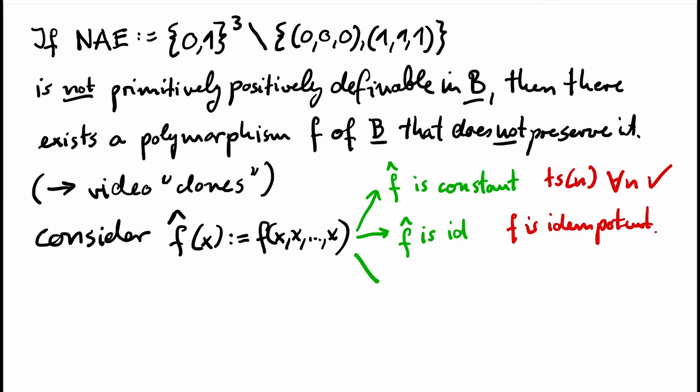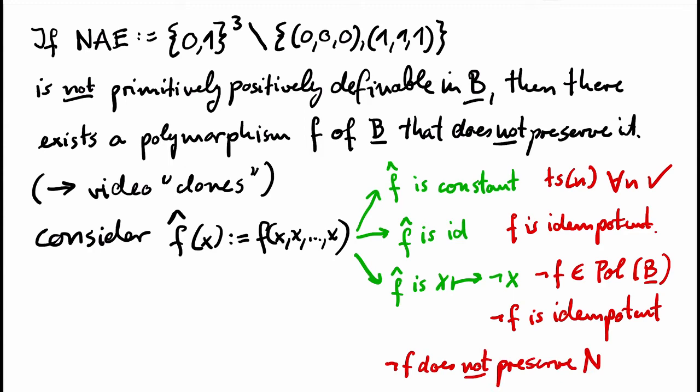Finally, if hat F is the Boolean negation function that maps 0 to 1 and 1 to 0, then the negation is an endomorphism of B. So the negation composed with F is also a polymorphism of B. Moreover, the negation of F is idempotent and still does not preserve the relation not-all-equals because the complement of that relation is preserved by negation. So we can replace F by the negation of F and have reduced the third case to the second case. So we may assume that F is idempotent.